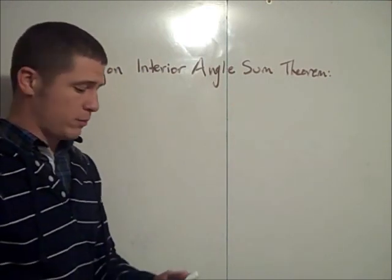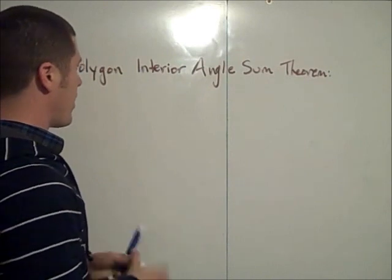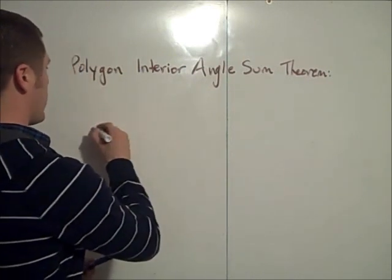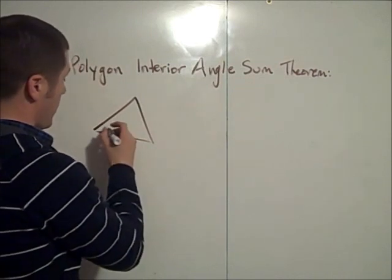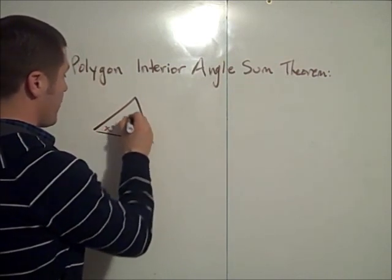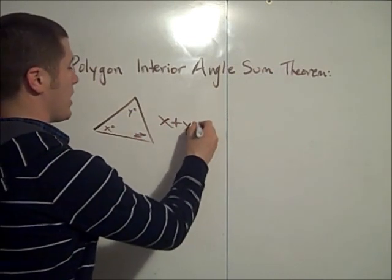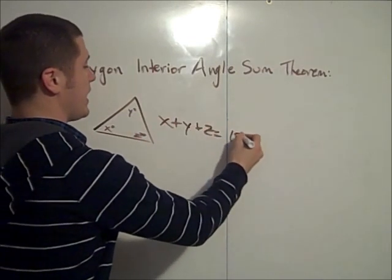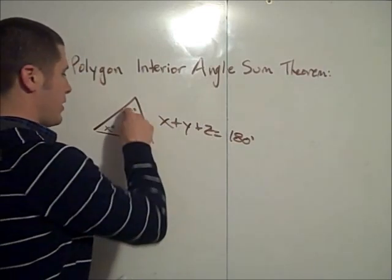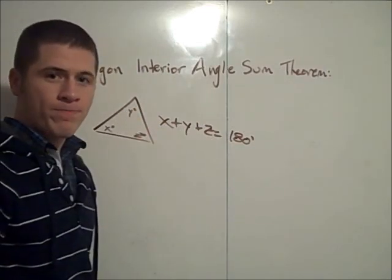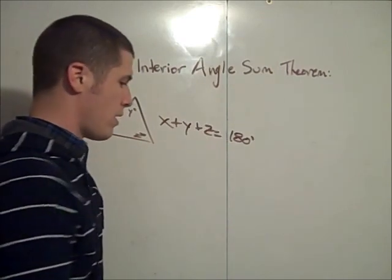It relies heavily on the Triangle Sum Theorem. So we have to know the Triangle Sum Theorem, and the Triangle Sum Theorem says that for a triangle, if this is x, this is y, and this is z, then x plus y plus z equals 180 degrees. So the Triangle Sum Theorem says that the sum of the interior angles of a triangle is 180 degrees, and we're going to use this theorem to our advantage.